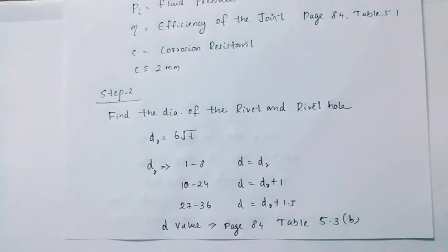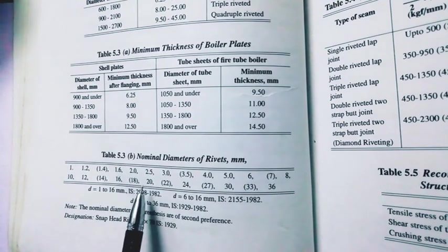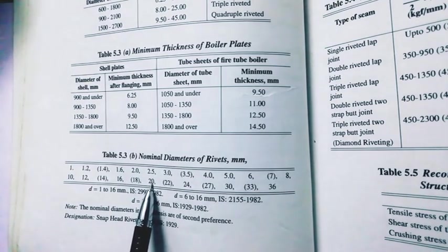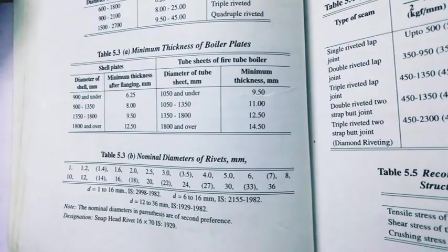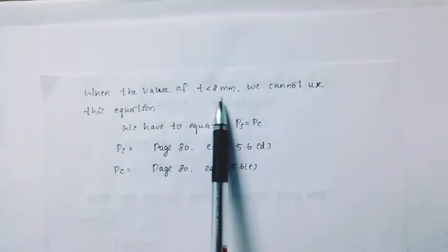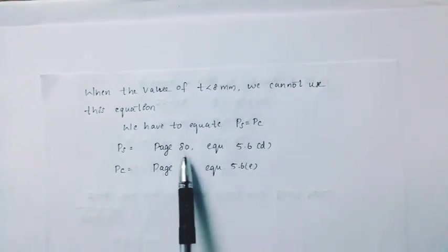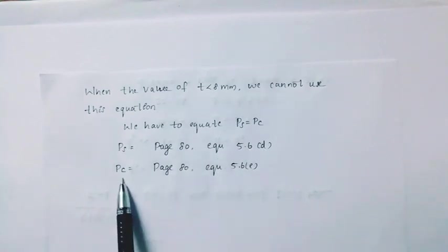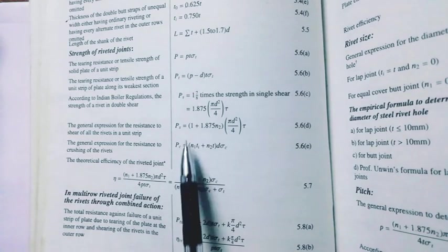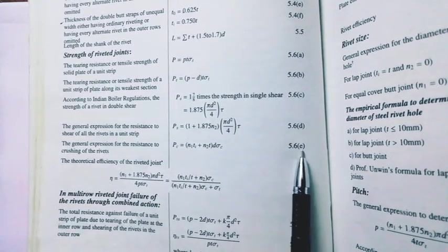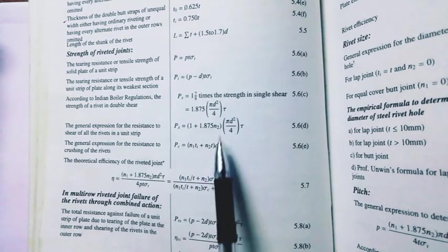When d equals 8mm, we cannot use this equation. We have to equate ps equal to pc. Ps page number 80 equation 5.6d and pc equal to page number 80 equation 5.6e. This equation we can use d and dm where dm is equal to d and we can use the thickness.